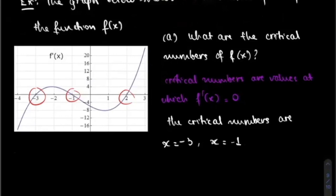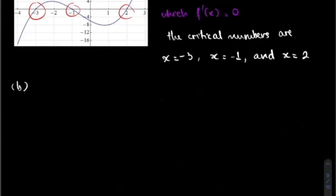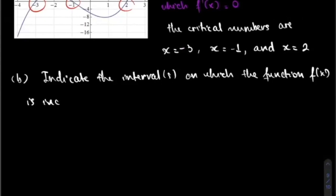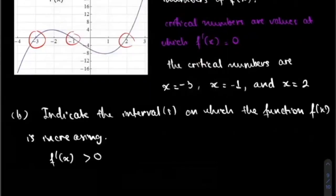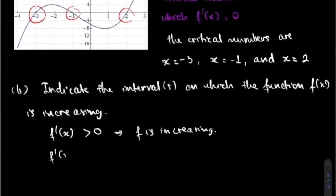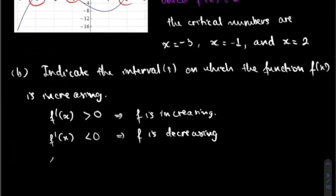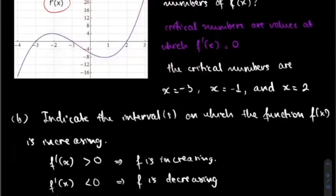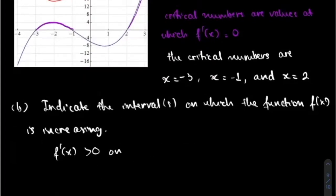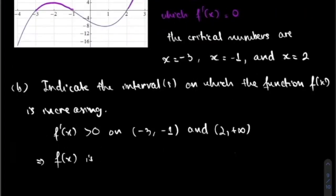So the critical numbers are X equal to negative three, X equal to negative one, and X equal to two. Part B: indicate the intervals on which the function f is increasing. F prime of X greater than zero implies f is increasing; f prime of X less than zero implies f is decreasing. Since this is the derivative graph, f prime of X is positive on the interval from negative three to negative one and from two to positive infinity — this implies f of X is increasing on those intervals.